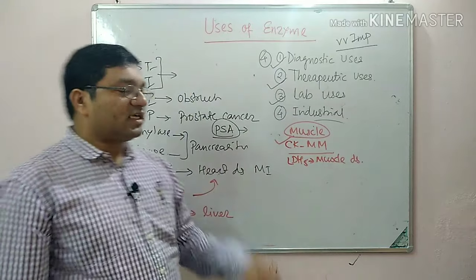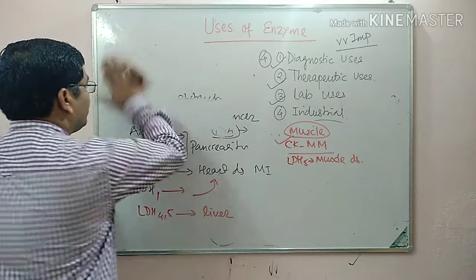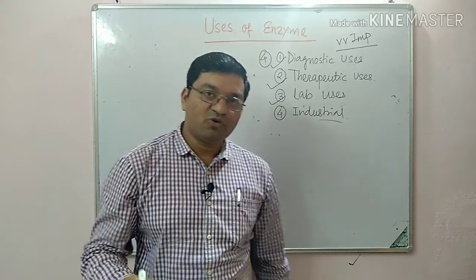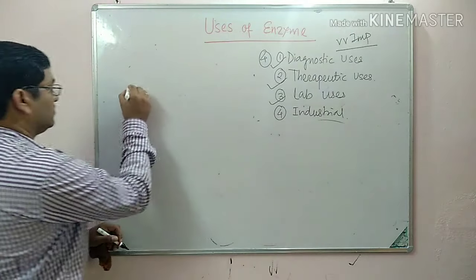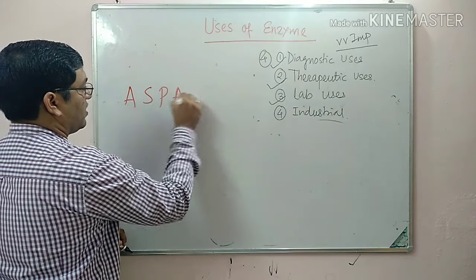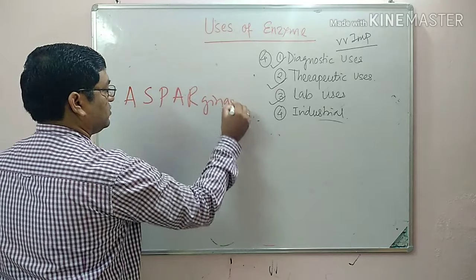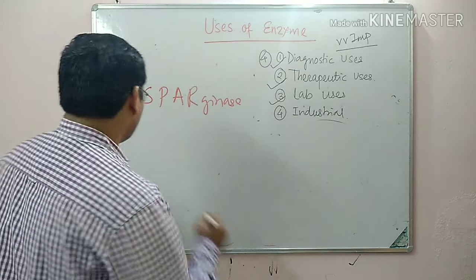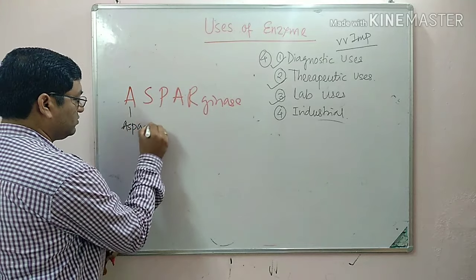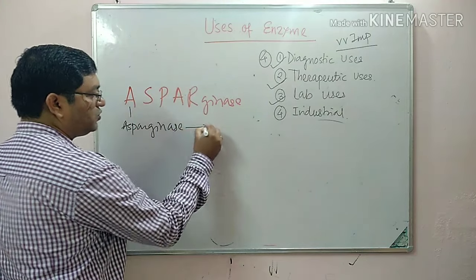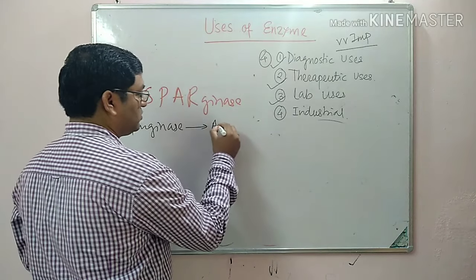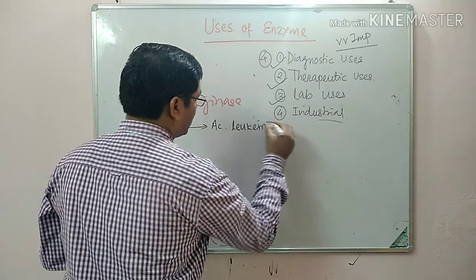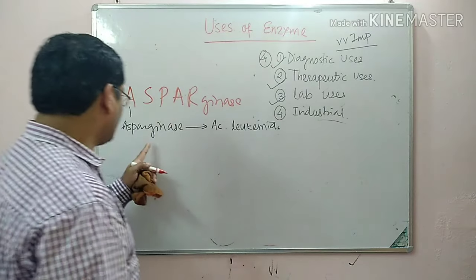Now coming to therapeutic uses of enzymes — it is easy to remember. The first enzyme is asparaginase, which is used in acute lymphoblastic leukemia.